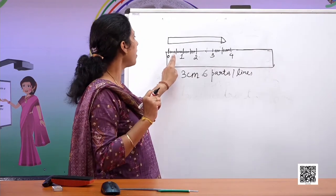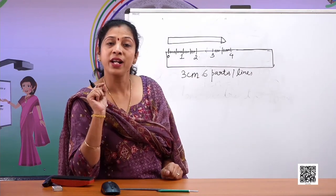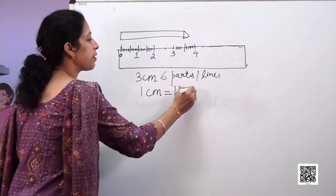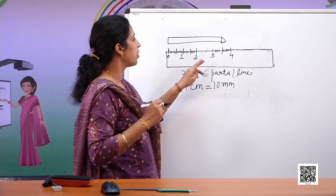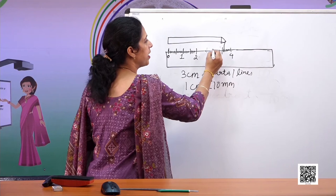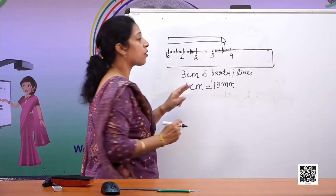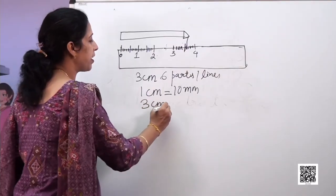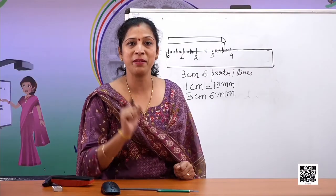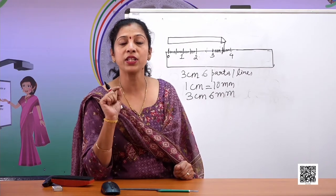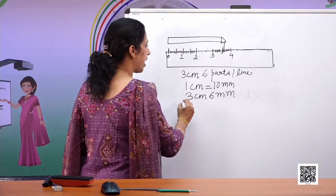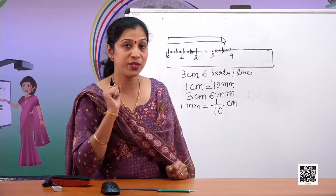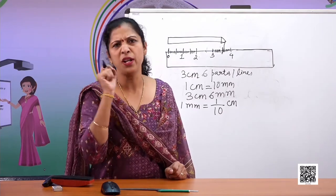So should I write 'three centimeters and six lines'? No, that would be wrong. There is something called millimeters — each of these small lines is one millimeter, which is one part out of ten equal parts. So one centimeter has been divided into ten millimeters. The pencil covers six small lines, which means six millimeters. So the length of the pencil is three centimeters and six millimeters. One centimeter has ten equal parts, so one tenth of a centimeter is one millimeter.